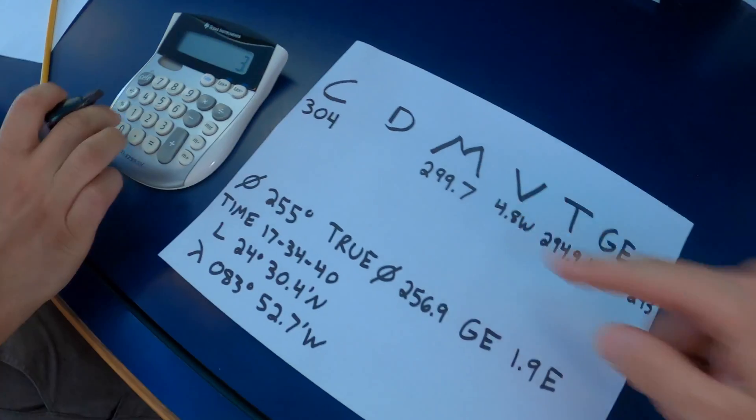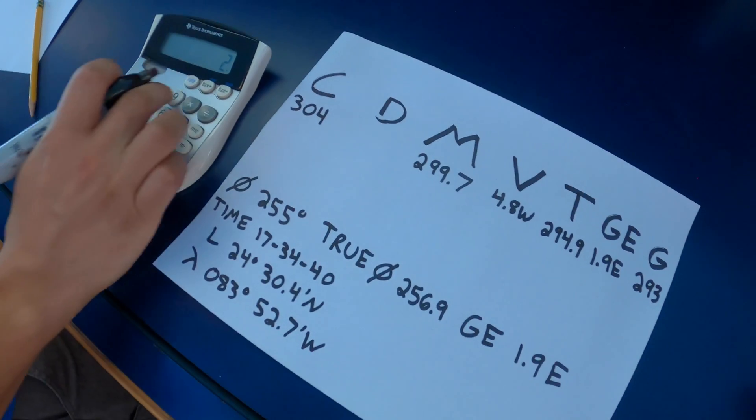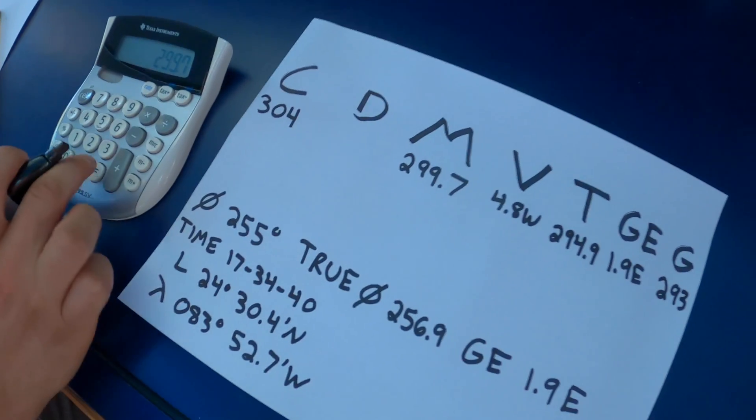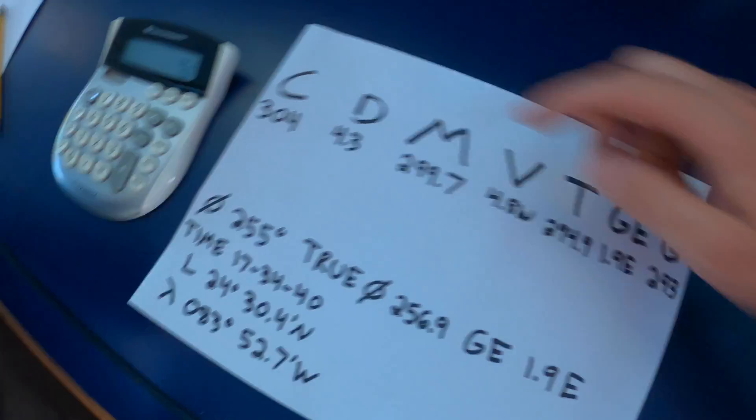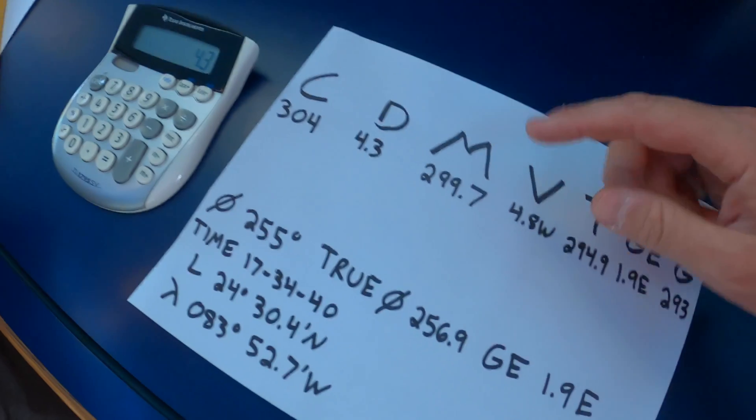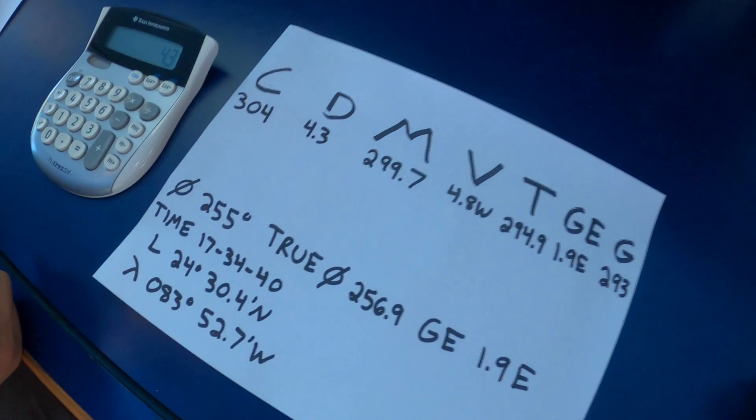So we'll put 304 here. It's just a matter of finding the difference. So 304 minus 299.7 is 4.3. And again, compass best, error west, so the deviation is 4.3 west.